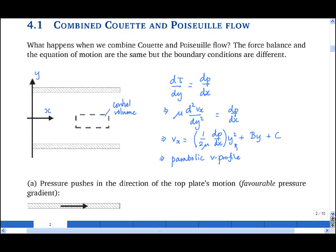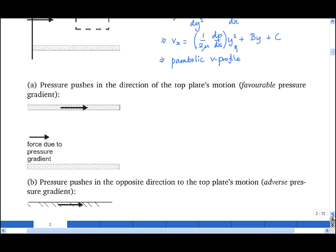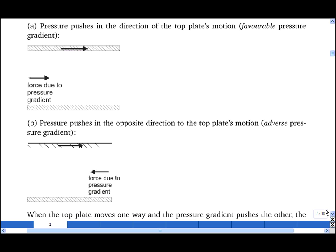Let's consider two cases of what could be called combined Poiseuille-Couette flow. In the first one, the top plate moves from left to right with speed v, and there is a high pressure on the left and a low pressure on the right. That means the forces due to the pressure gradient are in the same direction as the motion of the top plate.